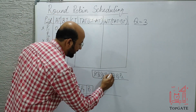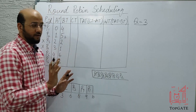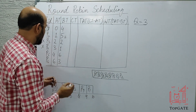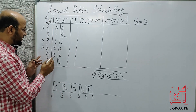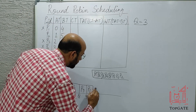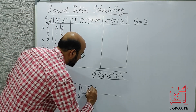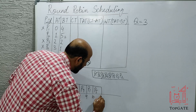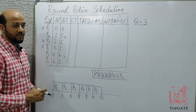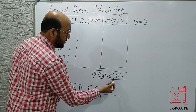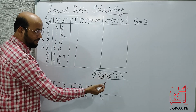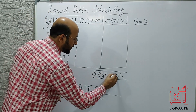P1 has completed so I cut it. The next process at the head of the ready queue is P5. P5's requirement is six but the time quantum is three, so I'll schedule P5 starting at 10 and stopping at 13 — three units done, three units still left. P5 has not completed, so I cut it and write it at the end of the ready queue.